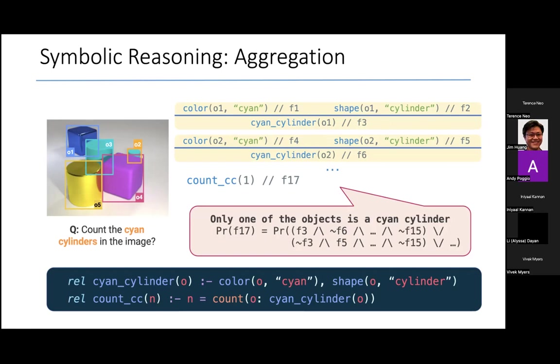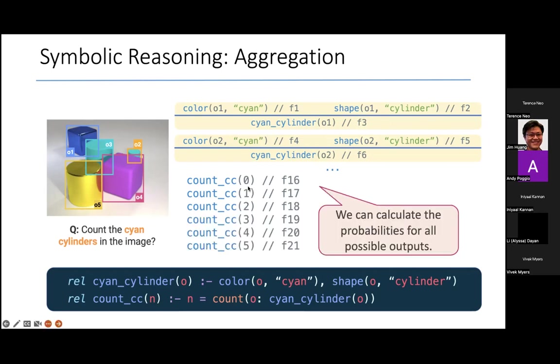We can do that for the case of one cyan cylinder. And already you see an explosion in the formula here, which says that either O1 is a cyan cylinder and none of the rest are, or O2 is a cyan cylinder and none of the rest are, and so on. In each of these cases, we get the count of one.